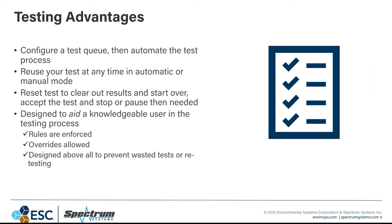Some of the advantages in the testing process include the ability to configure a test queue and automate the testing process. You can build the queue with the different steps needed, and if you wanted to run it in automatic mode, the test would essentially run itself as it went through the different steps. Once you've built and run a test, you can reuse it at any time in automatic or manual mode. The test is stored in the database, so you can just reuse it as a template — no separate template configuration needed.